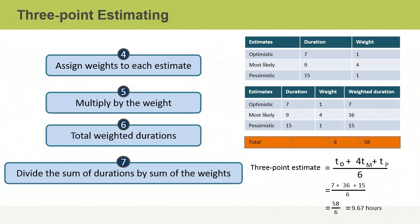The next step is to multiply each of the estimates by their respective weights to get the weighted durations. The most likely duration of 9 hours is multiplied by 4, giving a weighted duration of 36 hours. The optimistic and pessimistic estimates are weighted as 1 and so remain the same, 7 hours and 15 hours.